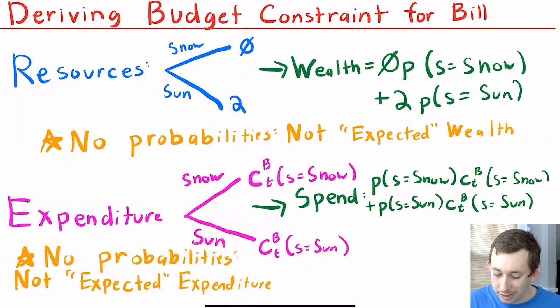Which means that Bill's wealth is zero times the price for a frozen coconut or a coconut when it's snowy outside, plus two times the price of a dry coconut or a coconut that falls when it's sunny outside.